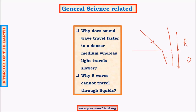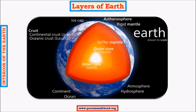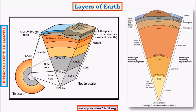Why S waves cannot travel through liquids has been covered — shear strength influences their travel nature. Based on all these observations, scientists concluded that there are concentric layers: crust, mantle, outer core, and inner core. The crust is about 50 to 100 kilometers thick in the continental region, whereas in the oceanic region its thickness completely decreases.